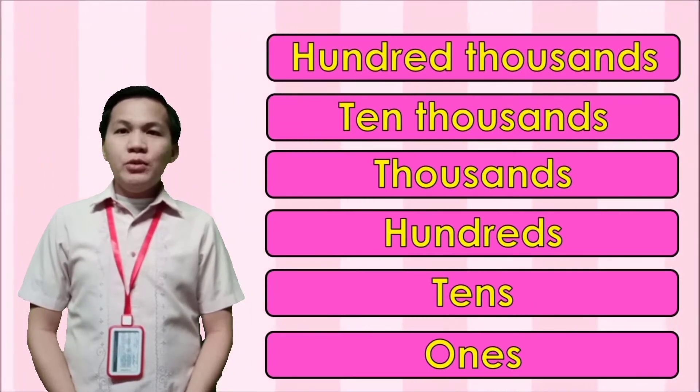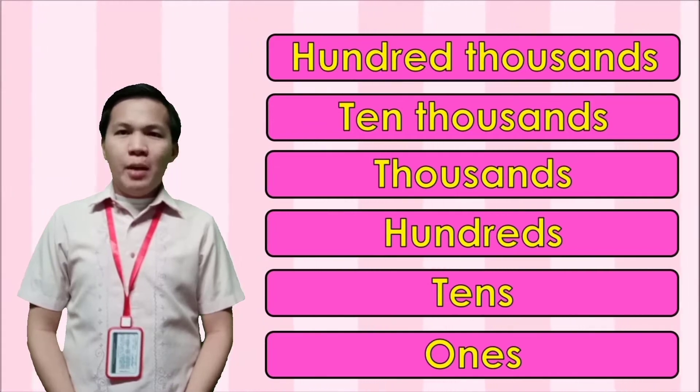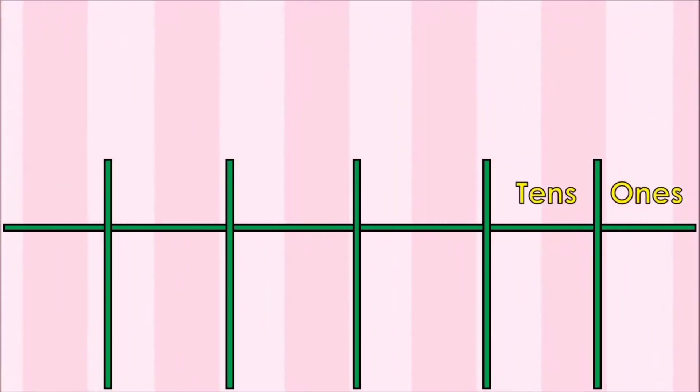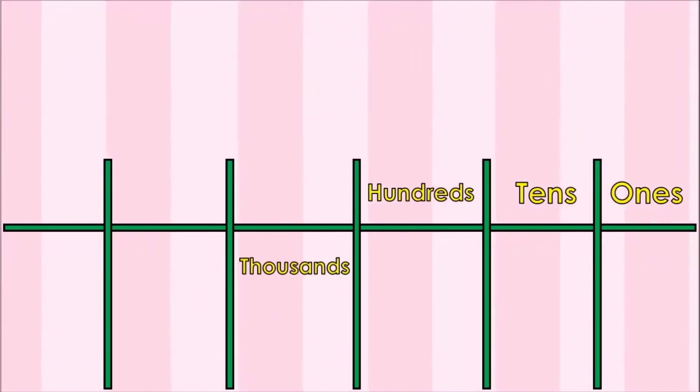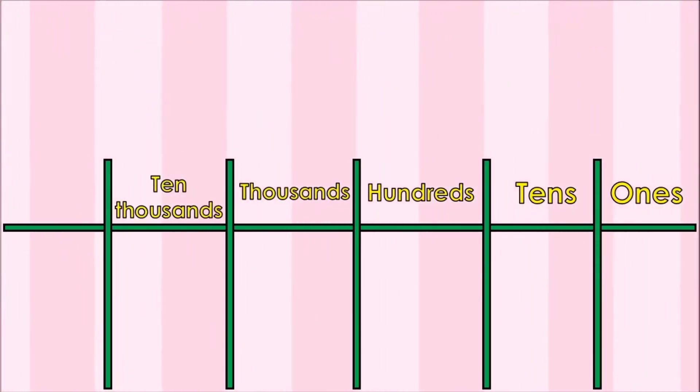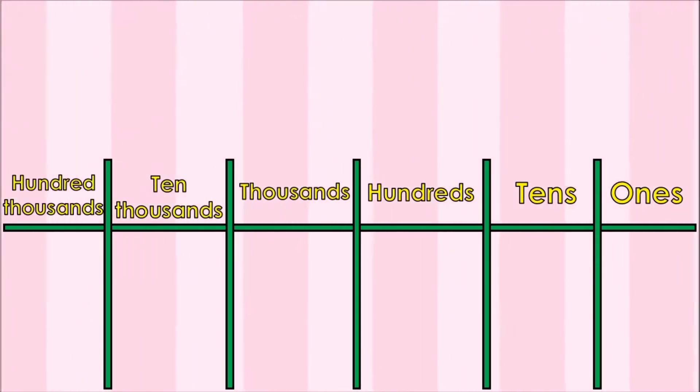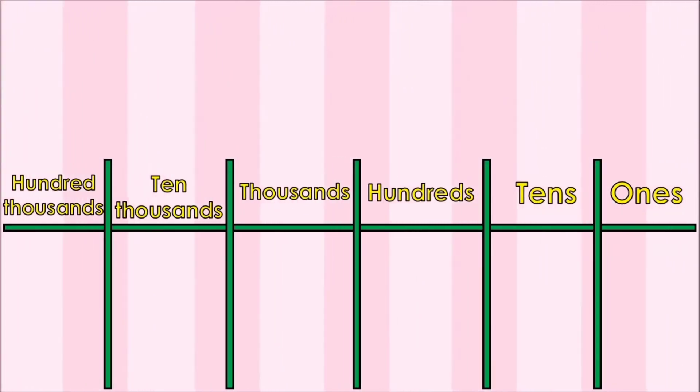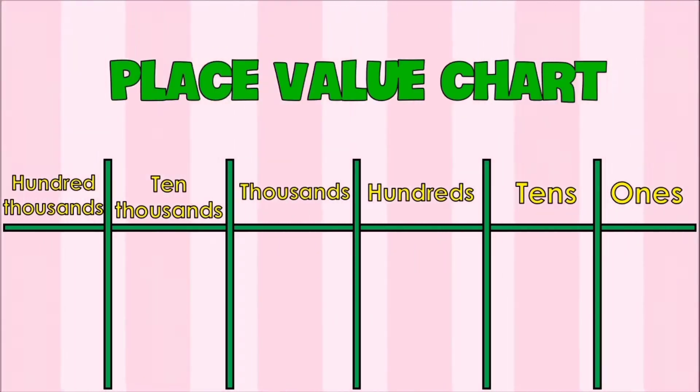Those are the place values for a 6-digit number. To further understand the concept of place value, I will show you something. Our place values are ones, tens, hundreds, thousands, ten thousands, and hundred thousands. This chart is called the place value chart.